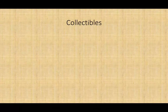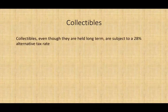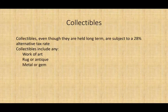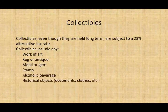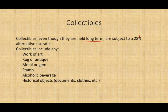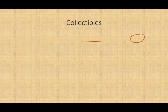We did not talk about collectibles in the prior session. Collectibles are works of art, rugs or antiques, metals or gems, stamps, alcoholic beverages — for example a bottle of wine aged 10, 15, or 20 years — and historical objects. Those are considered collectibles. If they are held long-term, they are subject to a 28% alternative tax rate, or your ordinary rate — the lesser of these two.